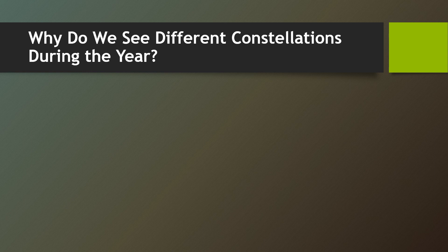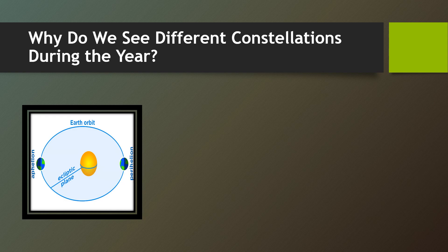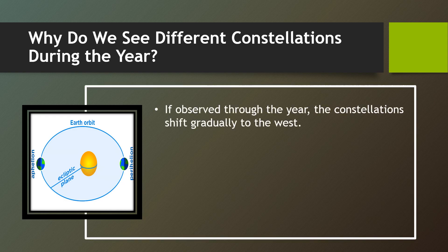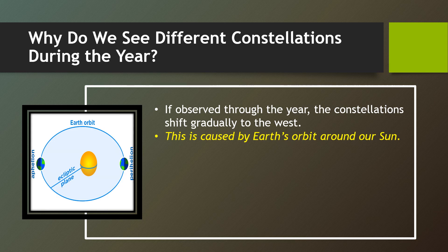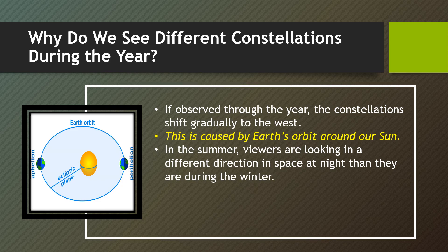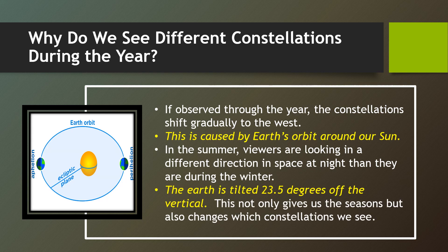Another question is: why do we see different constellations during the year? Here is the reason. If observed through the year, the constellations shift gradually to the west. This is caused by the Earth's orbit around our sun, and that is what we call revolution. In the summer, viewers are looking in a different direction in space at night than they are during the winter. The Earth is tilted 23.5 degrees off the vertical, which not only gives us the seasons but also changes which constellations we see.